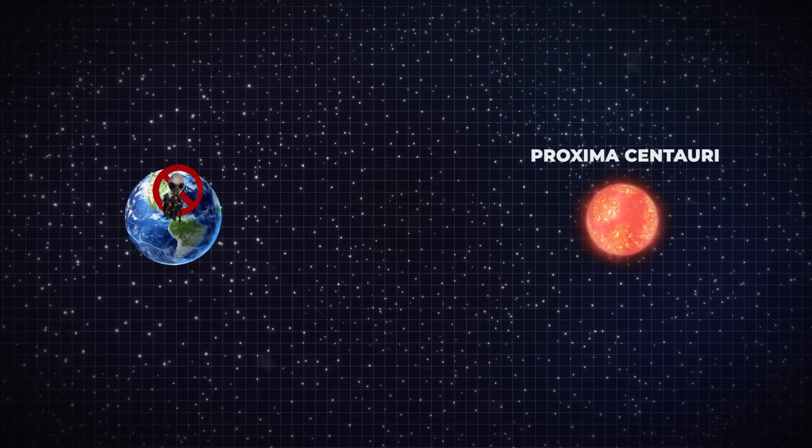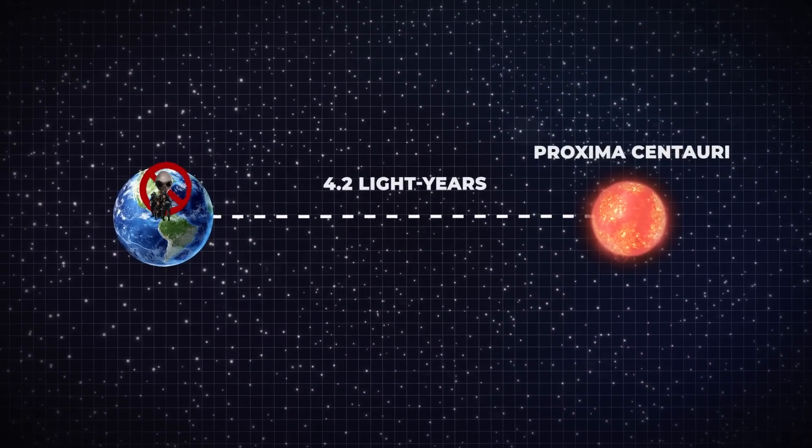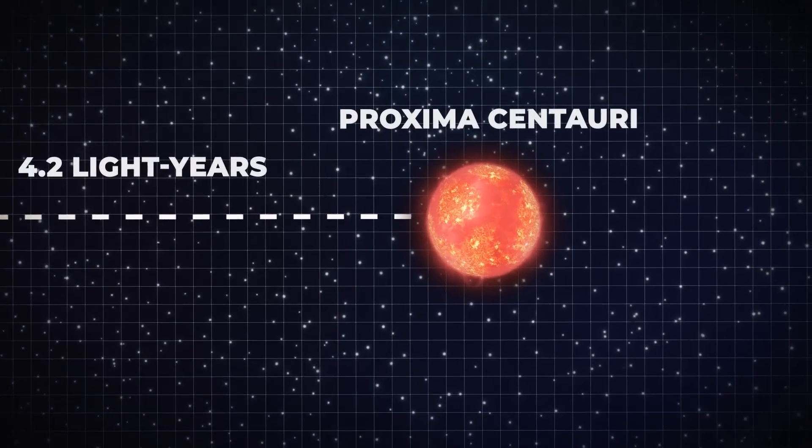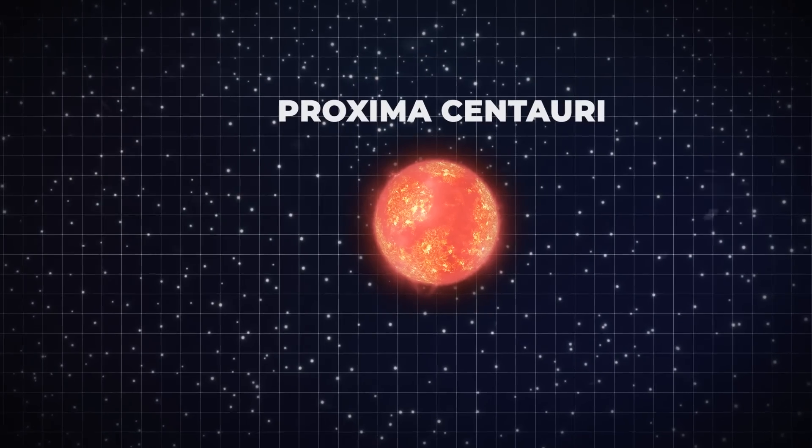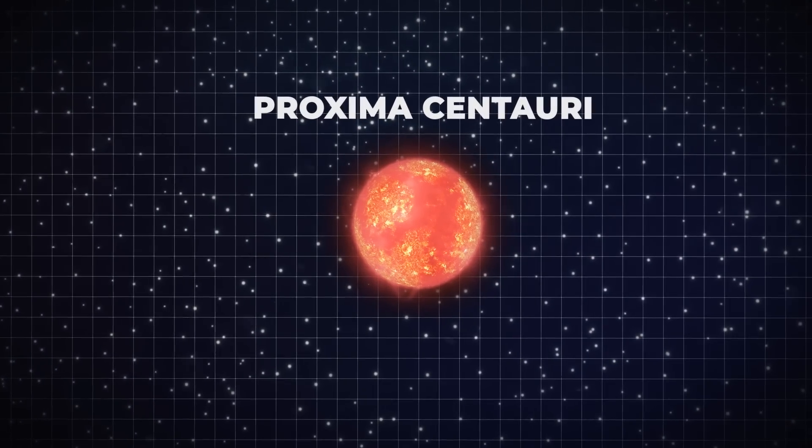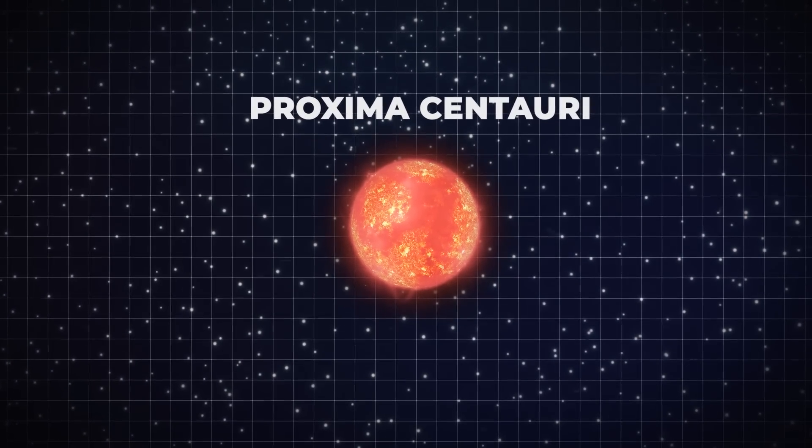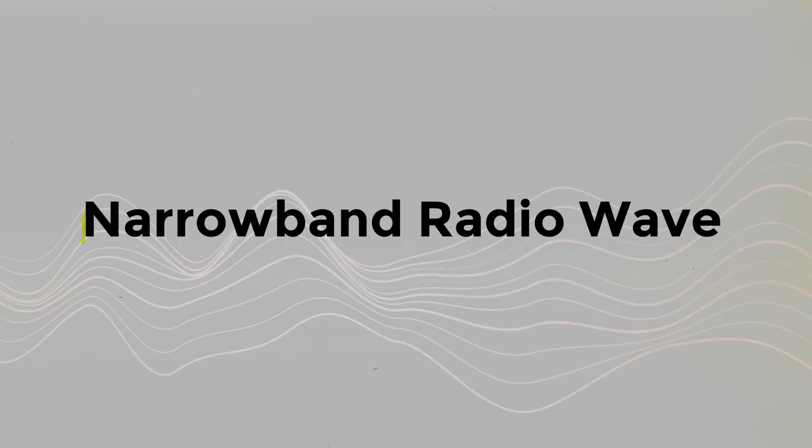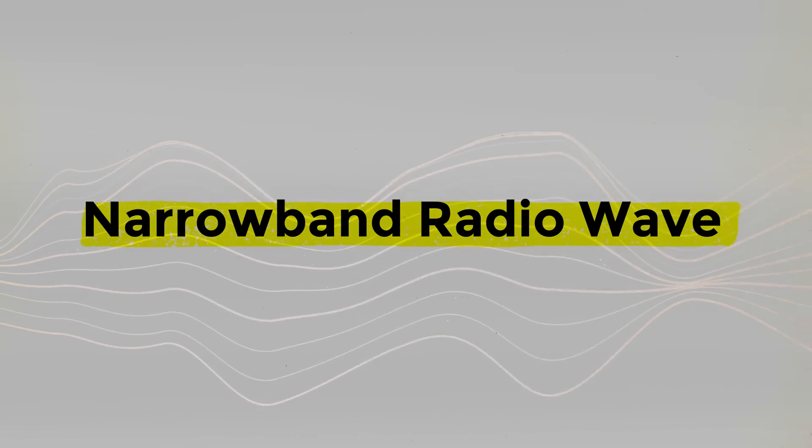The nearest star system to our Sun, located about 4.2 light-years away, may have at least one habitable planet, according to a 2019 discovery by astronomers. Scientists speculated that the signal might have originated from an extraterrestrial civilization because it was a narrowband radio wave generally associated with man-made items.